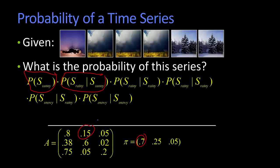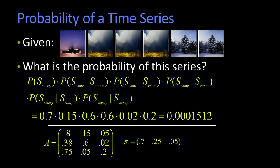And when I multiply all those numbers together, 0.7 times 0.15 times 0.6, I get some number, 0.0001512, okay? They tend to be small numbers, by the way, probabilities in HMMs or in Markov models.